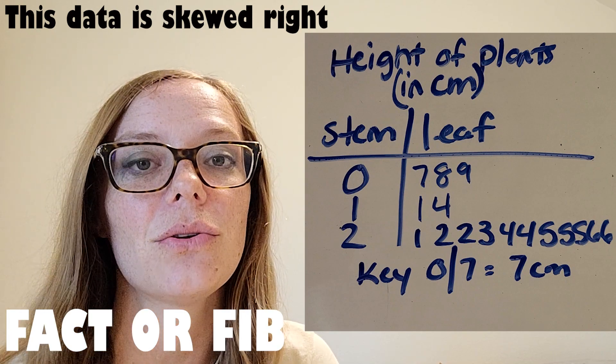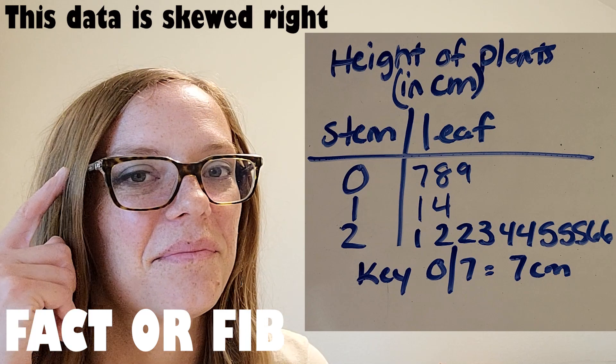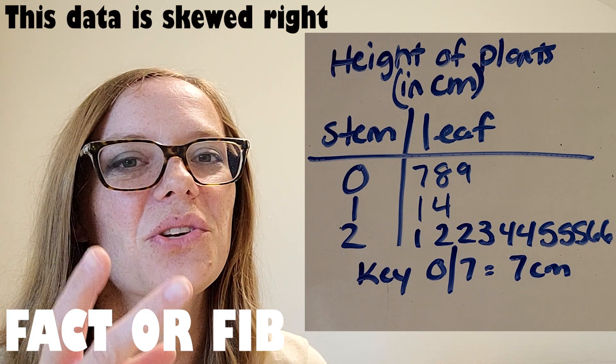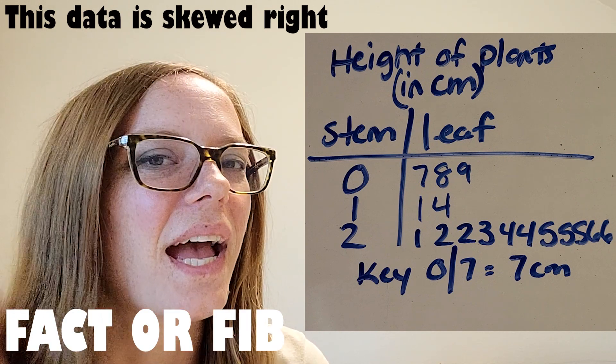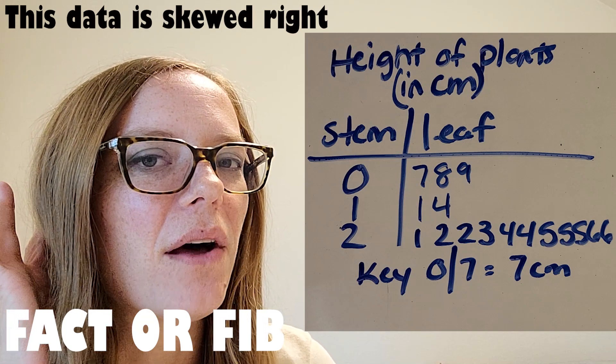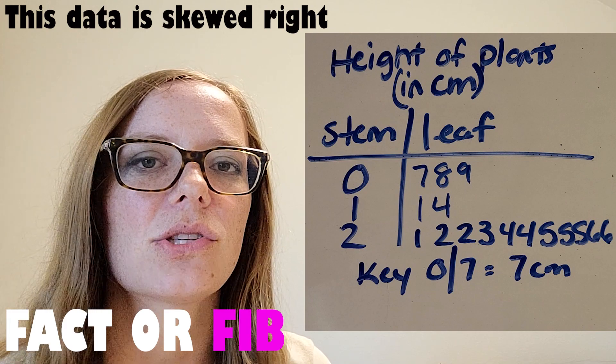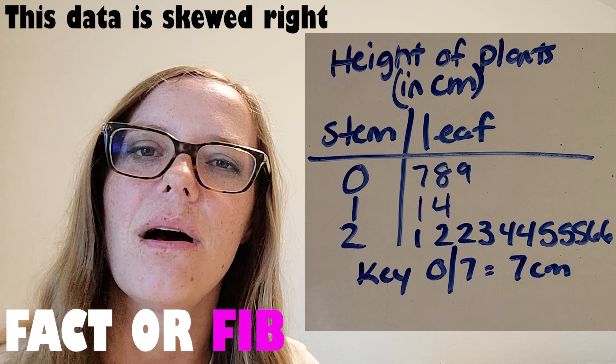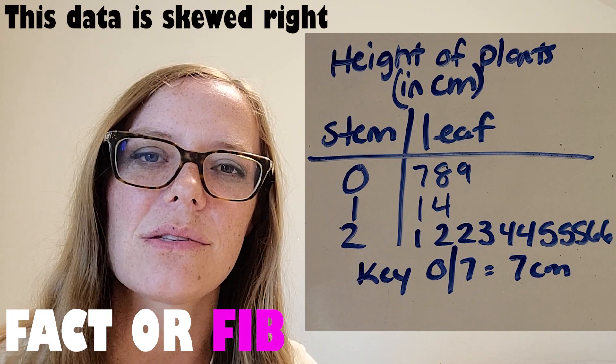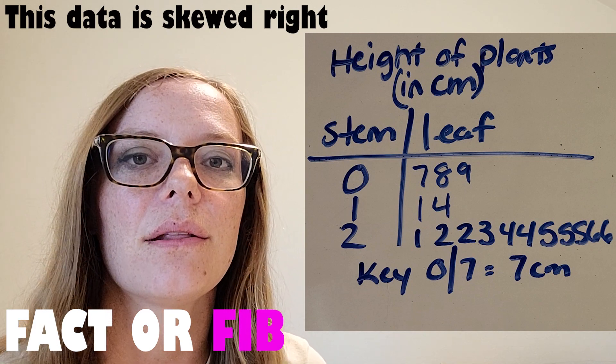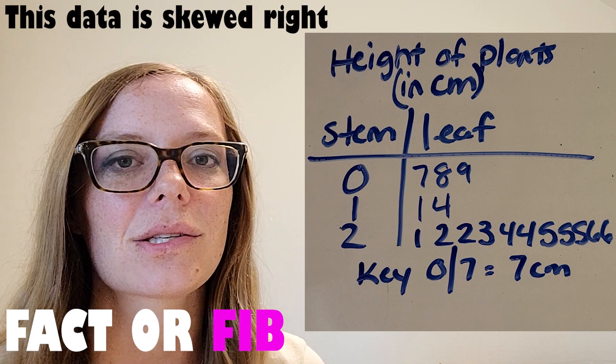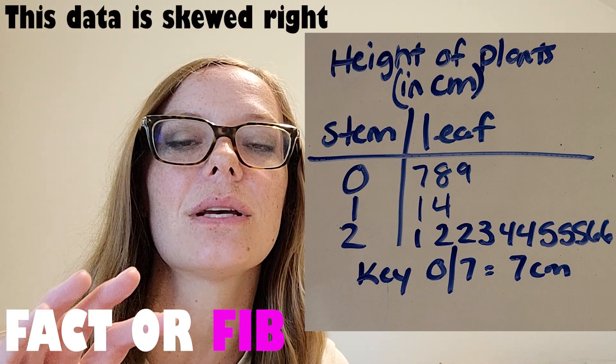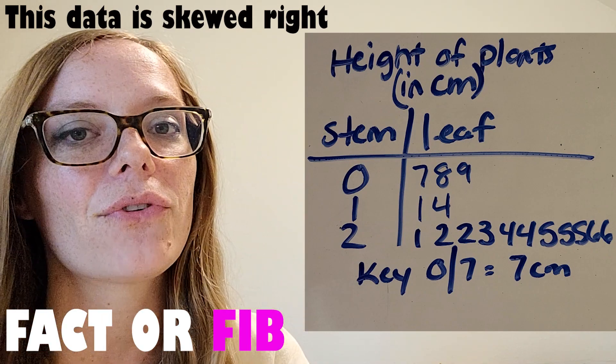Here's the next one. This data is skewed right. Think about it. All right, one, two, three, go. I heard, I think a fib on that one, because skewed means skewed right or skewed left means that there is a kind of like a tail trailing off in that direction. And there's not as many data points, they're kind of more like outliers that are happening. And the other data is on peaks on the other side. So this data is skewed left, because it peaks on the right, and then it trails off on the left.